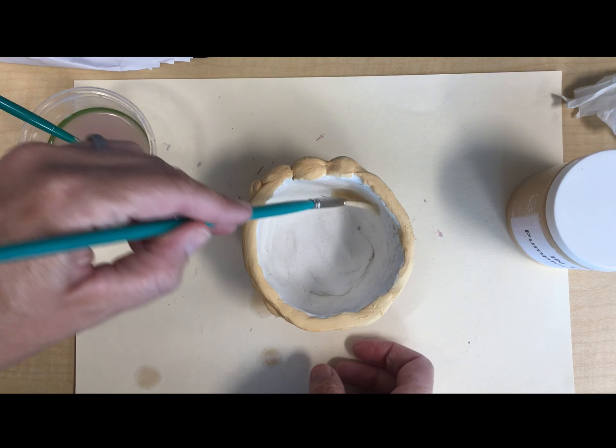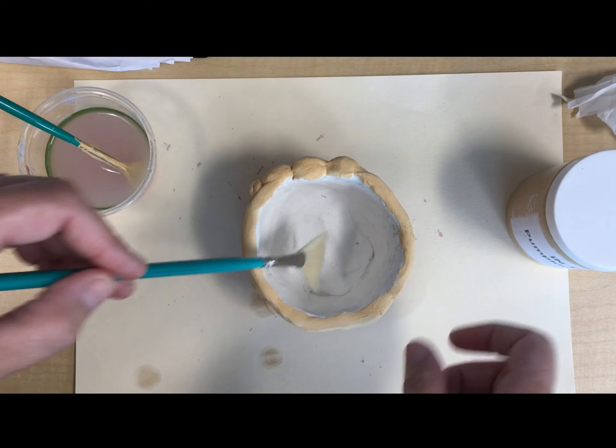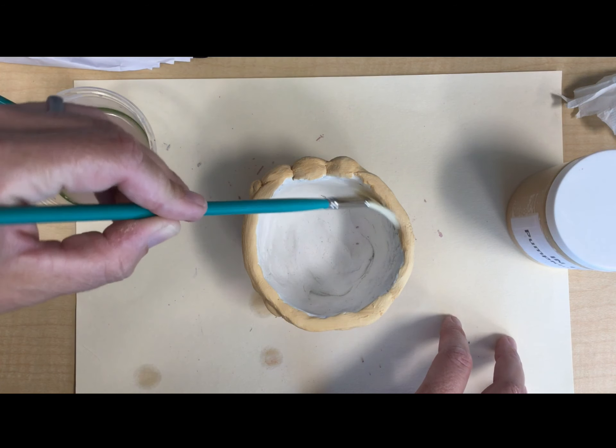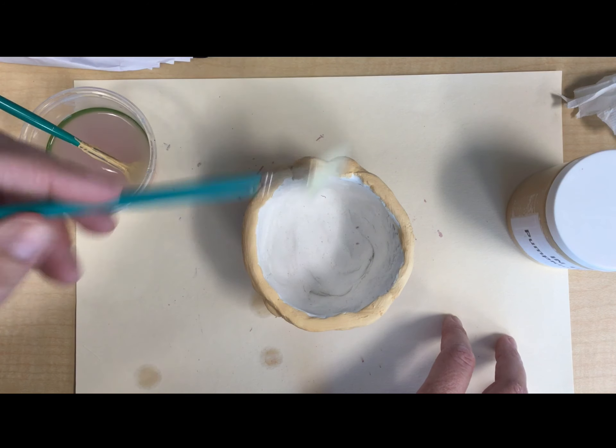Another option if you don't want to add a color is we have clear glaze. So you can ask Mrs. Snyder about that. Clear glaze just looks really nice and it'll just make it look really nice and shiny.